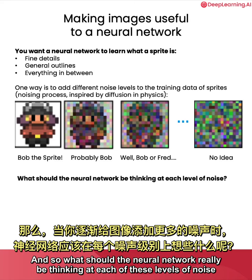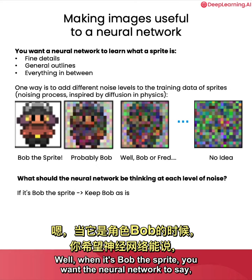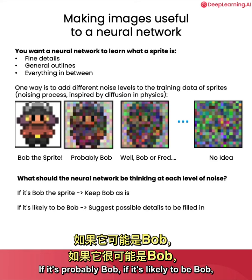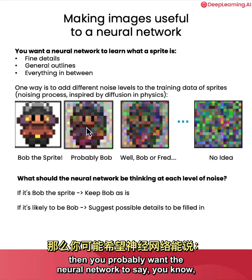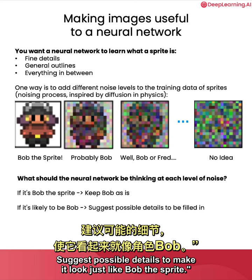So what should the neural network really be thinking at each of these levels of noise when you add progressively more noise to the image? Well, when it's Bob the sprite, you want the neural network to say yeah, that's Bob the sprite — to keep Bob as is, that is a sprite. If it's probably Bob, if it's likely to be Bob, then you probably want the neural network to say there's some noise on here, suggest possible details to make it look just like Bob the sprite.